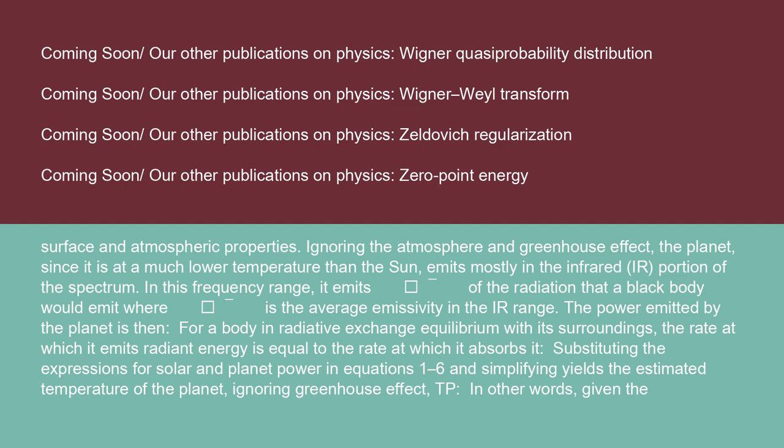Ignoring the atmosphere and greenhouse effect, the planet — since it is at a much lower temperature than the Sun — emits mostly in the infrared (IR) portion of the spectrum. In this frequency range, it emits ε of the radiation that a black body would emit, where ε is the average emissivity in the IR range. For a body in radiative exchange equilibrium with its surroundings, the rate at which it emits radiant energy equals the rate at which it absorbs it. Substituting the expressions for solar and planet power and simplifying yields the estimated temperature of the planet.